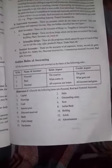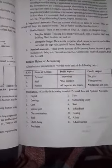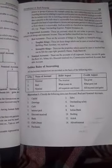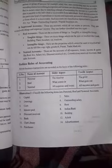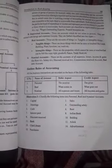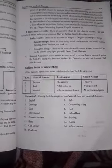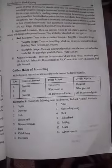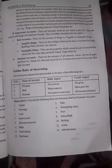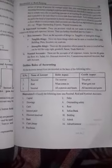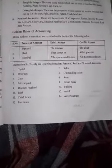Next, golden rules of accounting. For personal accounts: debit the receiver, credit the giver. For real accounts: debit what comes in, credit what goes out. For nominal accounts: all expenses and losses are debited, all incomes and gains are credited. The numerical questions will be clear once classified as personal, real, and nominal account.